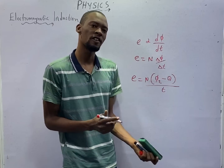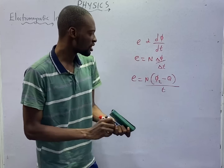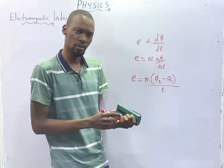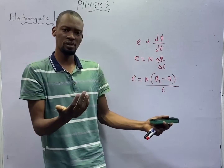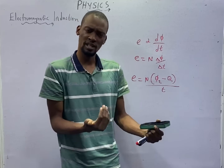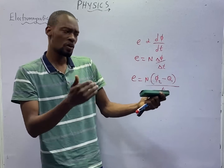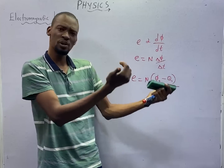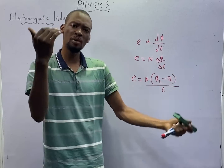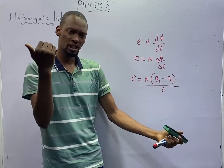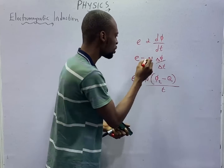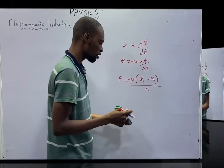If something is changing, it means the final value minus the initial value. This is where Lenz's law comes to play. Lenz's law states that the direction of the induced current or induced EMF is in a way that it opposes the motion producing it. So the two EMFs are opposite to each other, meaning the sign here becomes minus.